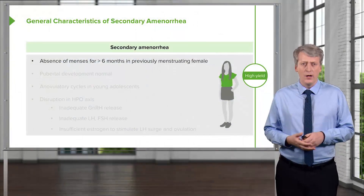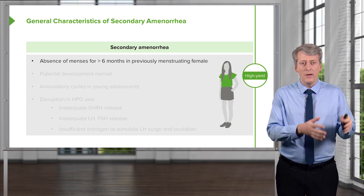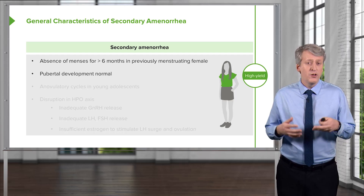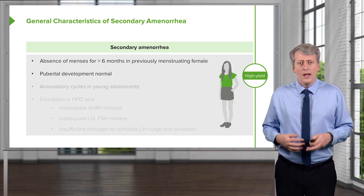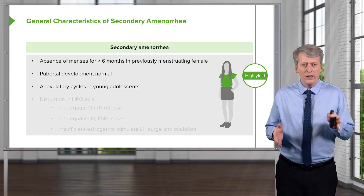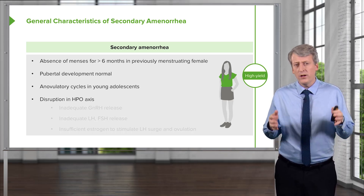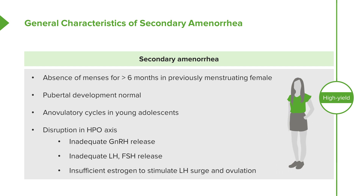Secondary amenorrhea is the absence of menses for more than six months in a patient who was previously menstruating. Generally, these patients have normal pubertal development. Adolescents may have anovulatory cycles and be fairly irregular, especially early on, but six months is too long. This is generally a disruption in the HPO axis — it can result from inadequate GnRH release, inadequate LH and FSH release, or insufficient estrogen to stimulate the LH surge and ovulation.